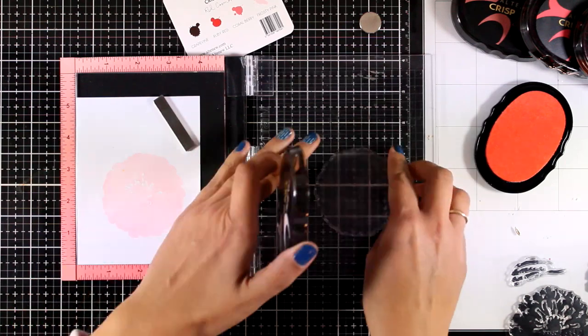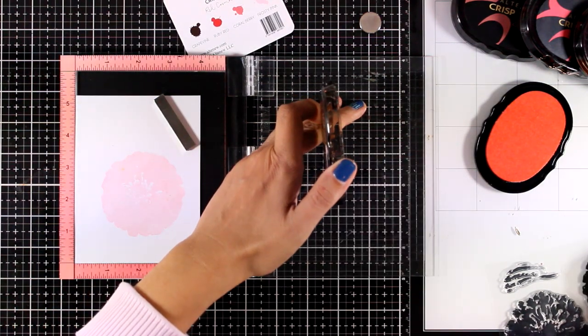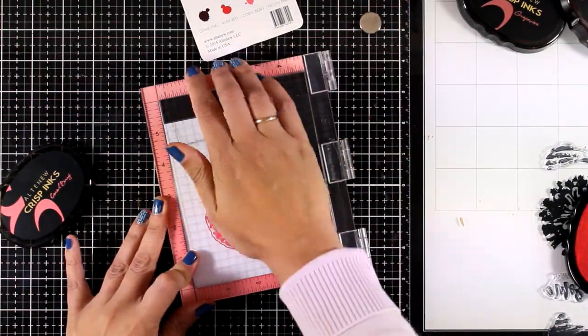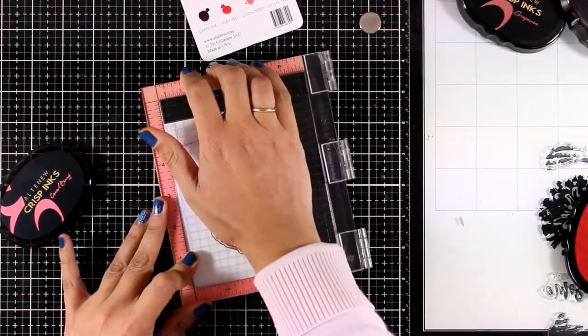They also come in small little ink tubes, so they are more economical if you want to grab more colors. For the first layer, I used Frosty Pink. This is the second layer and I'm using Coral Berry.